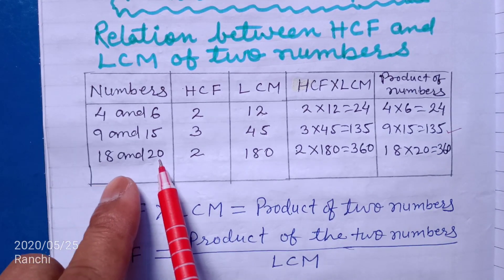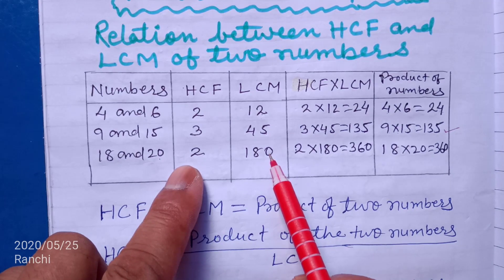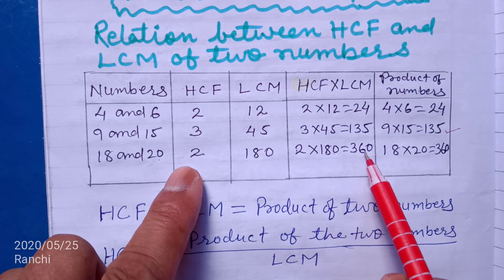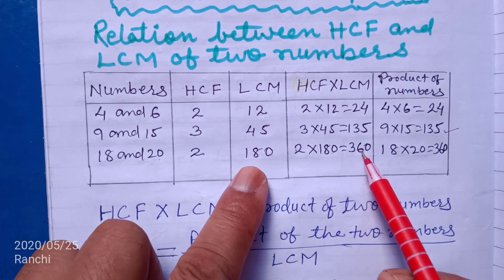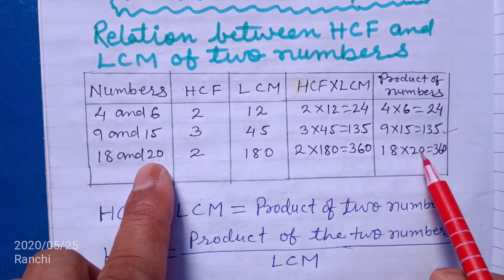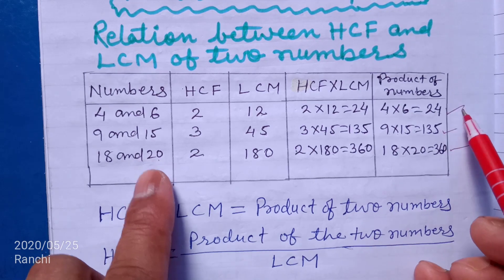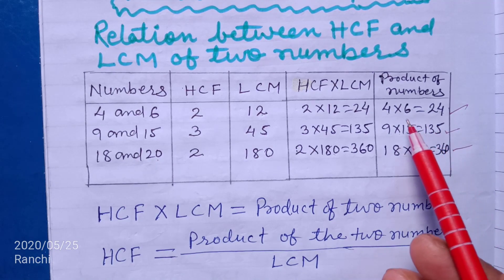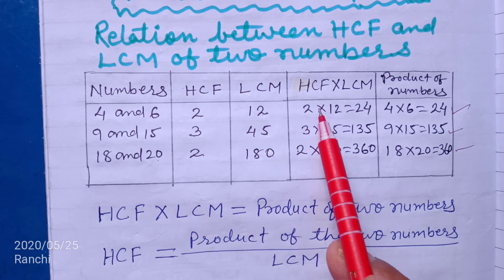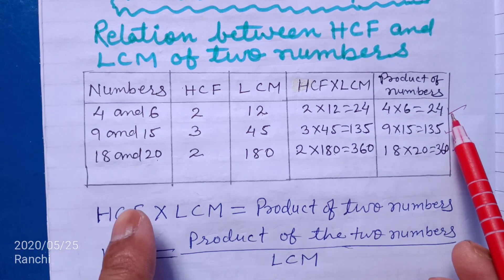Now consider 18 and 20: HCF is 2, LCM is 180. HCF into LCM equal to 2 into 180 equal to 360, and product of numbers: 18 into 20 equal to 360. So students, you can see that in all cases, the product of HCF and LCM is equal to the product of the numbers.